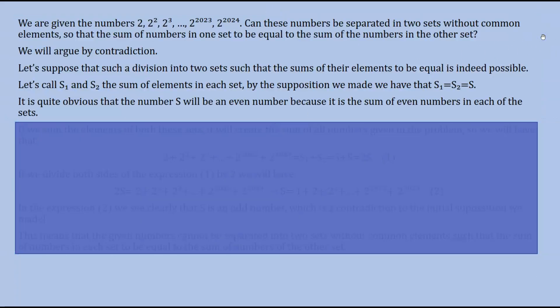We rewrite the problem, so we are given the numbers 2 to the power of 2, 2 to the power of 3, up to 2 to the power of 2024. Can these numbers be separated in two sets without common elements so that the sum of the numbers in one set to be equal to the sum of the numbers in the other set?